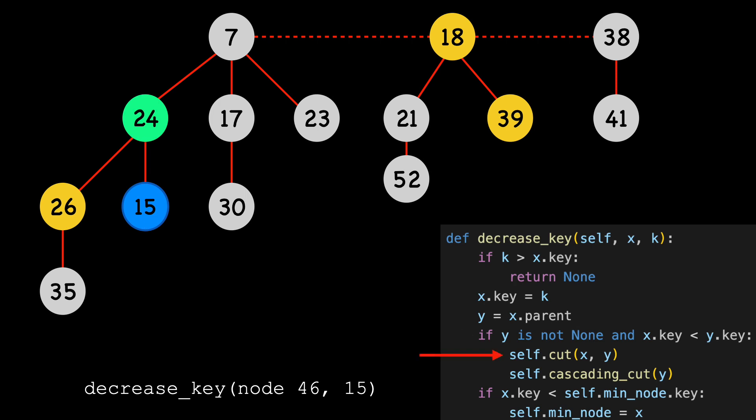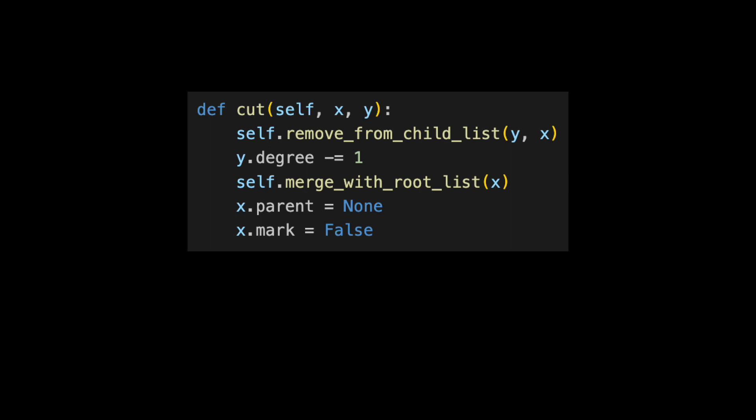We call the cut function, passing in X and Y. Let's take a look at the code for cut. Its job is to simply cut the link between X and Y by moving X into the root list. It first removes X from Y's child list and decrements Y's degree by 1. It then merges X with the root list and sets its parent to none and mark to false.